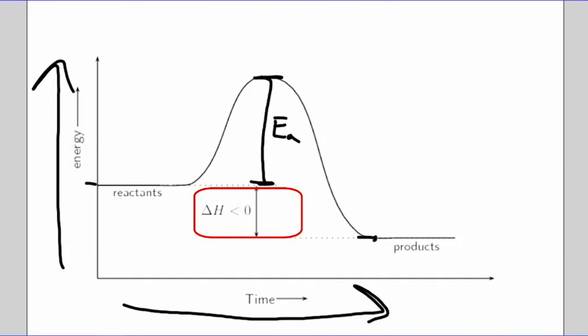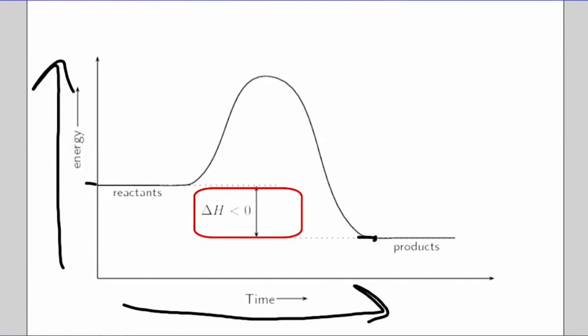This is currently an uncatalyzed reaction. Let's add a theoretical catalyst and see what happens to the energetic pathways. The reactants will remain at the same energetic state, and the energetic state of the products will remain the same. The only thing that changes is the new activation energy will be less than the original activation energy. Catalysts lower the activation energy — that's what catalysts do, that's what enzymes do.